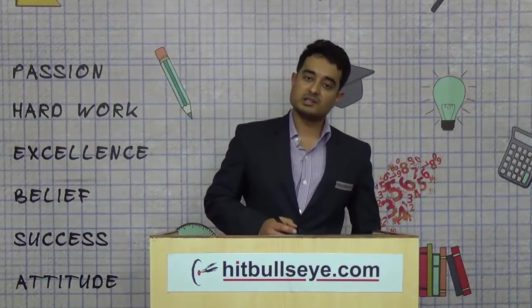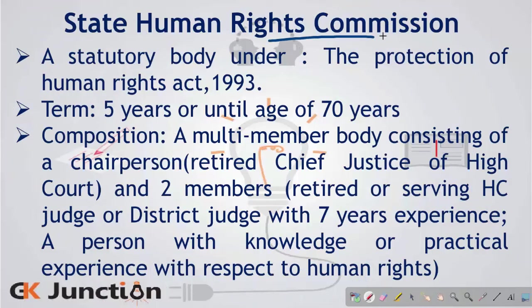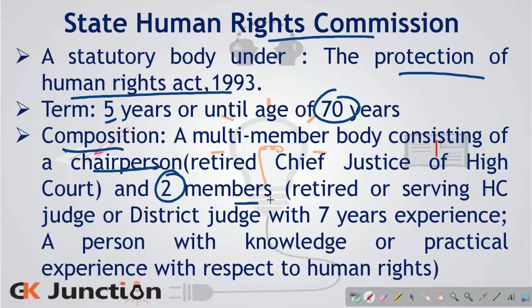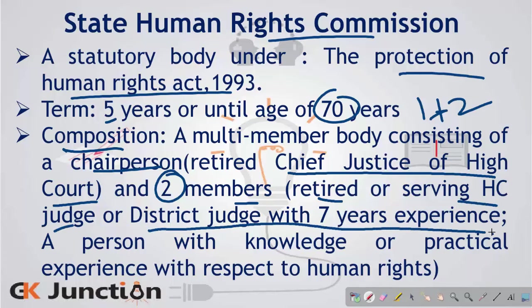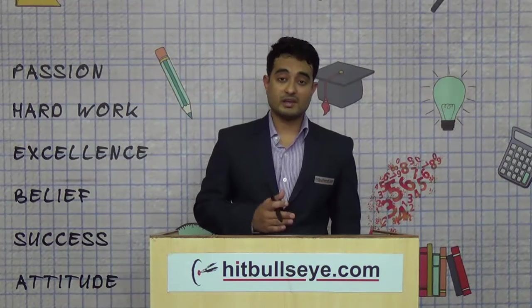At the state level there are State Human Rights Commissions, also formed under the Protection of Human Rights Act 1993. The term is five years or until the age of 70 years. It is a multi-member body consisting of a chairperson and two members. The chairperson shall be a retired Chief Justice of a High Court; one member shall be a retired or serving High Court Judge or a District Court Judge with seven years' experience; and the second a person with knowledge or practical experience in human rights. The functions of a State Human Rights Commission are similar to those of the national commission but at the state level.